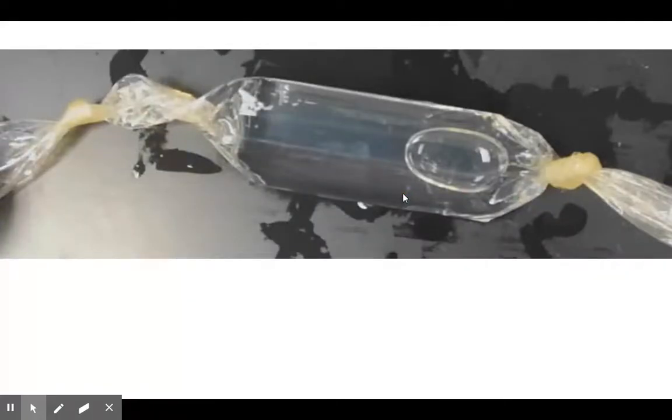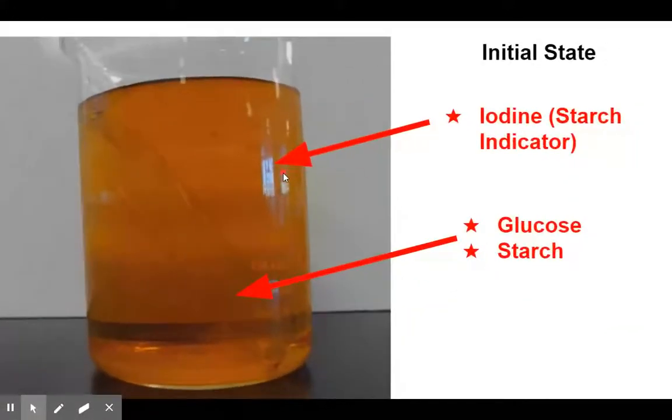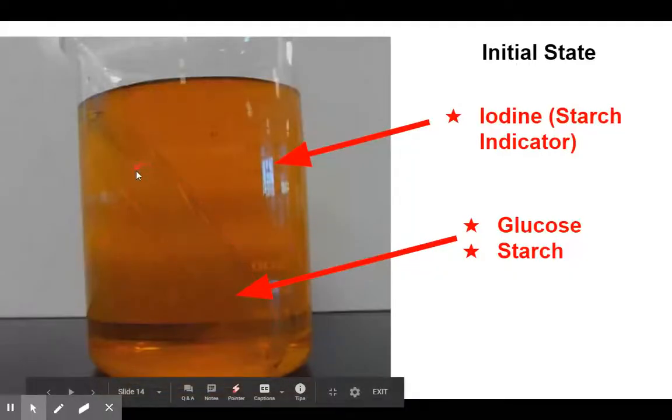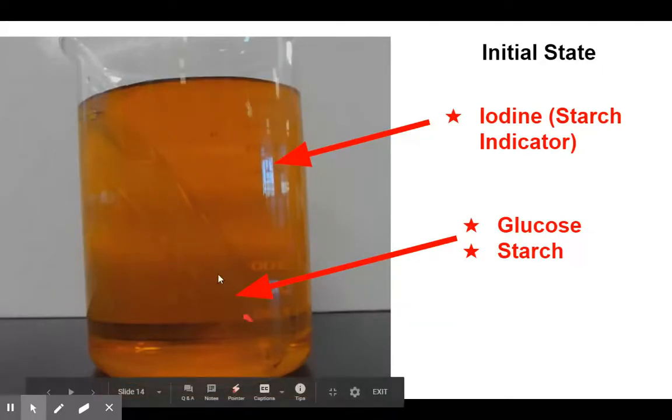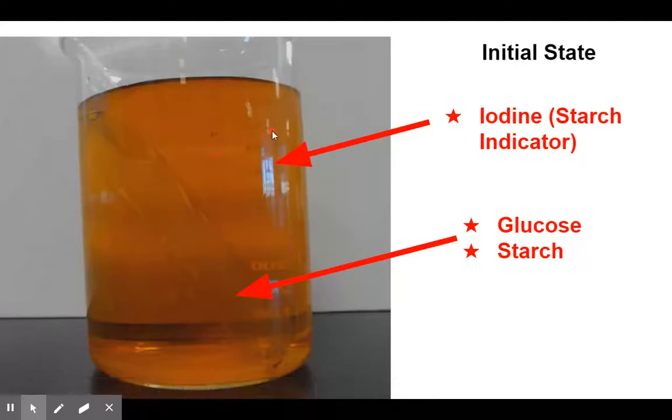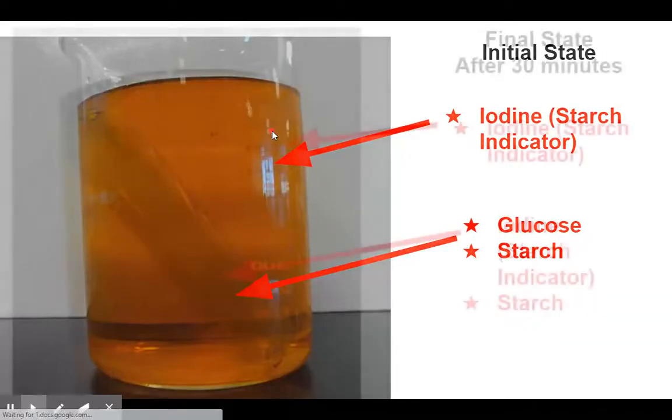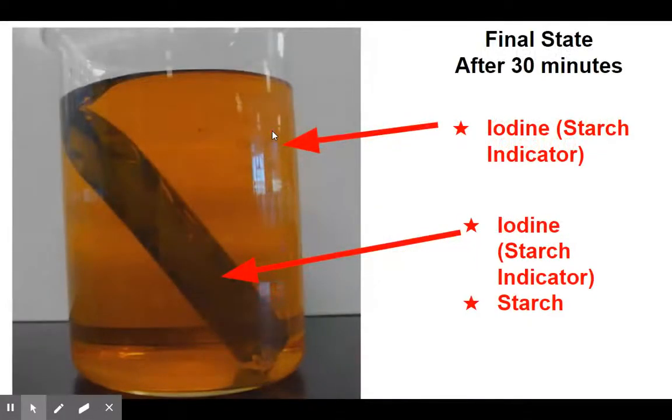This is to set up the experiment. We're going to look at the initial state of putting the dialysis tube, which is right here, in a solution of iodine, which is a starch indicator. Because there's glucose and starch on the inside initially, we're not going to notice anything. But after time goes on, we notice something. What do we notice?